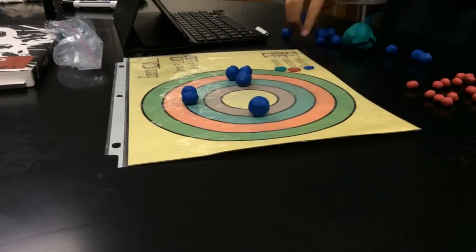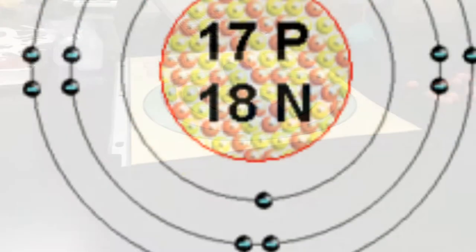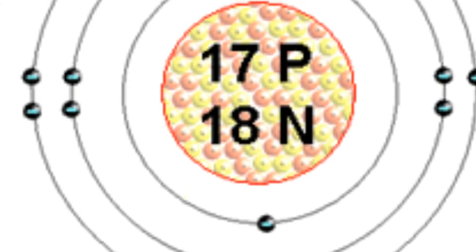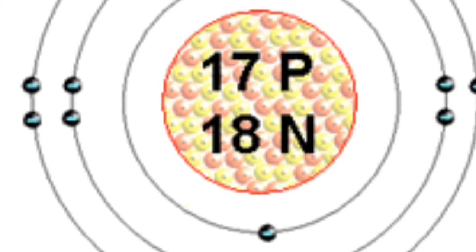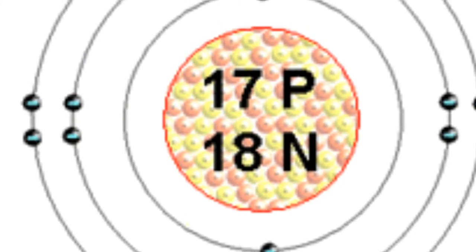Chlorine-35 has 17 electrons, which are represented by the blue clay. Chlorine-35 has 77.77% natural abundance, AMU of 34.969, and an average atomic mass of 35.453.